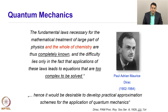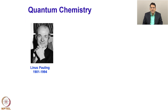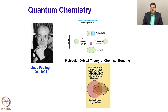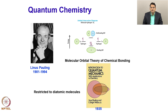All the gentlemen we discussed in the context of quantum mechanics were physicists. The first quantum chemist came in the form of Linus Pauling. Pauling is famous for his molecular orbital theory, and he actually wrote the first book of quantum chemistry — Introduction to Quantum Mechanics with Applications to Chemistry — published in 1935. Although molecular orbital theory is very good for diatomic and some polyatomic molecules, it cannot be used for a general molecular system, and that is what the Hartree-Fock method actually does.